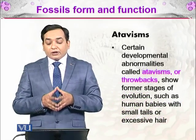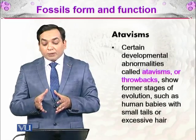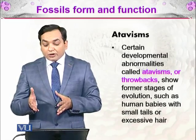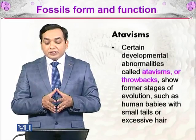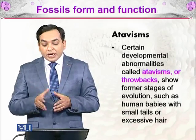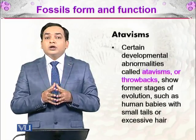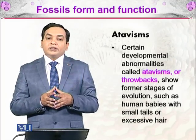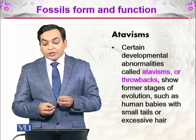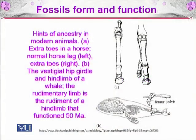Atavisms are certain developmental abnormalities or throwbacks — that is, they represent former stages of evolution. Examples include human babies born with small tails or excessive hair. You can see a diagram showing hints of ancestry in modern animals: the normal horse leg is on the left side, and an extra toe is on the right side. That extra toe is an example of atavism.